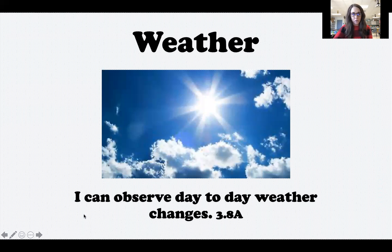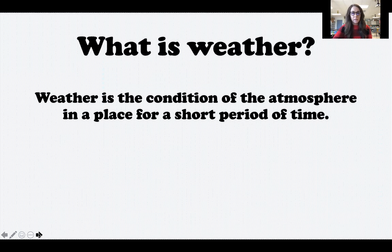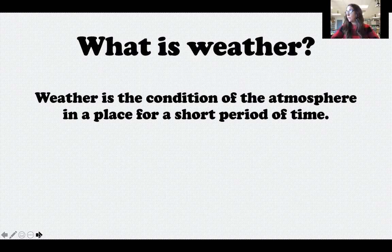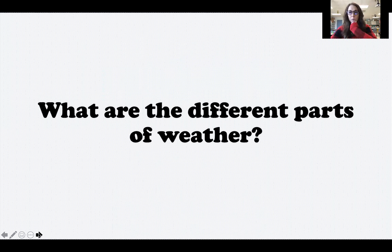Your target says: I can observe day-to-day weather changes. Hopefully you remember that weather is the condition of the atmosphere in a place for a short period of time. The earth is surrounded by a layer of gases and clouds, and these things control the weather. Whatever is happening up in the atmosphere affects the weather we get down here on earth — whether it's hot, cold, sunny, rainy, cloudy, or snowy.